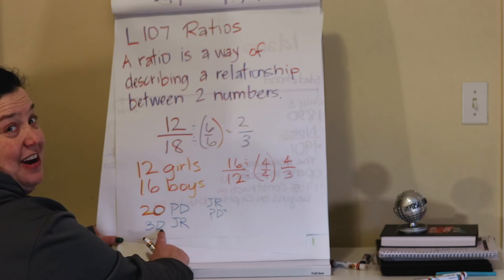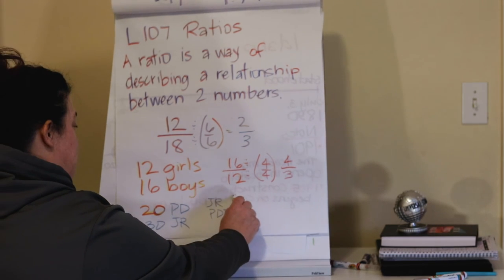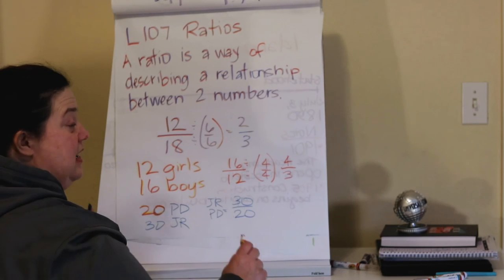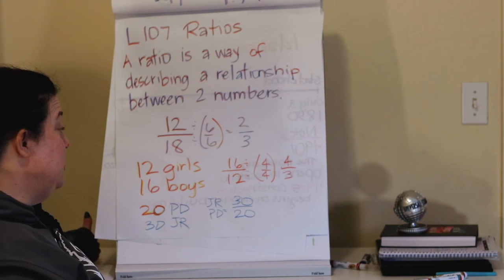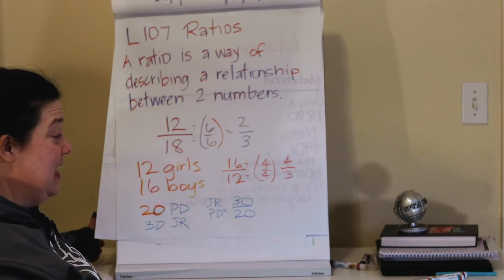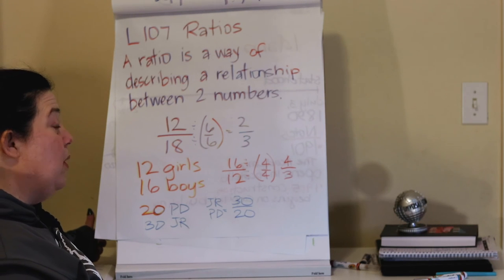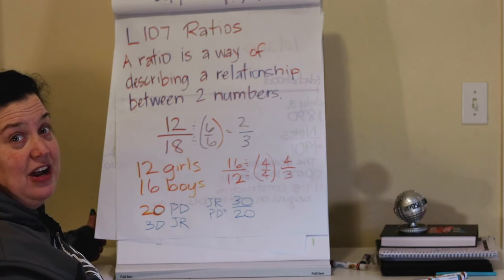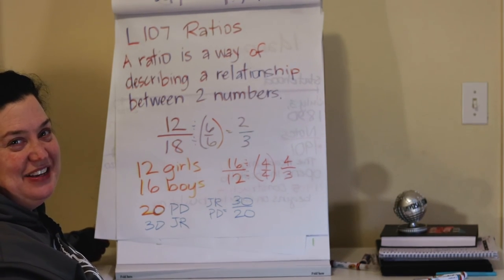Well, our jackrabbit number is 30. Our prairie dog number is 20. So the ratio is 30 to 20, but it can be reduced. What number, your greatest common factor, can go into both 30 and 20?